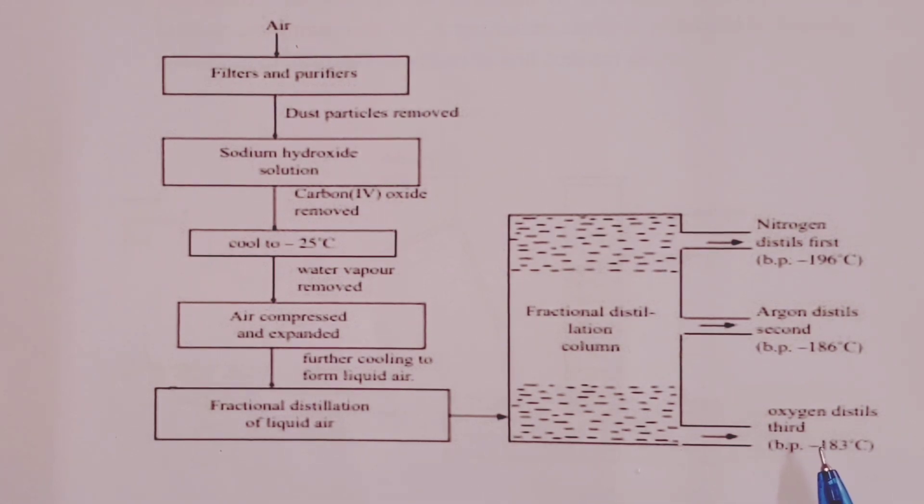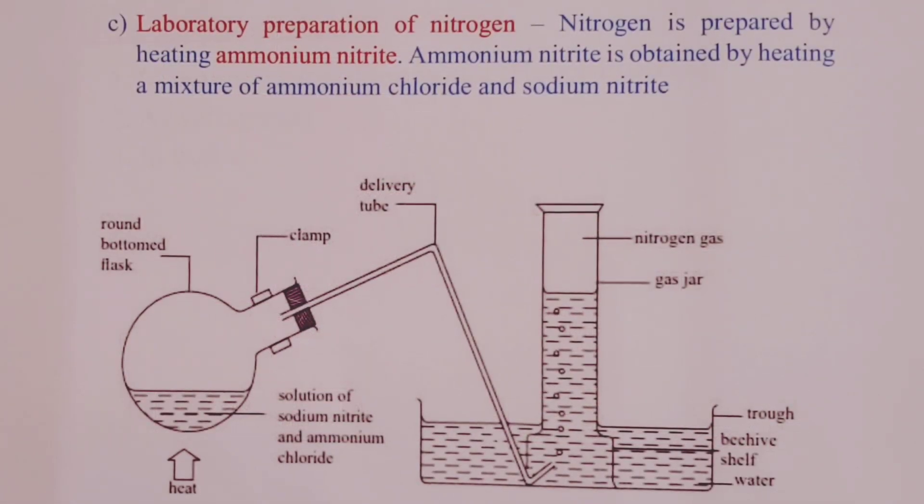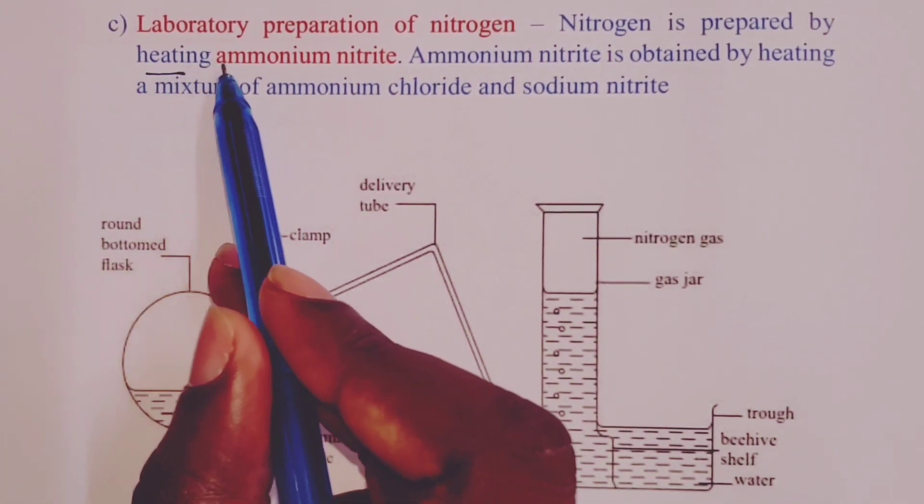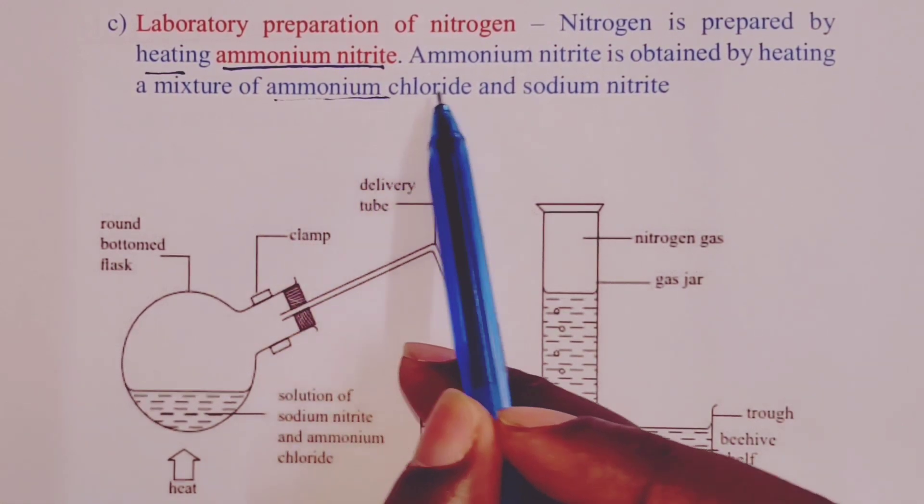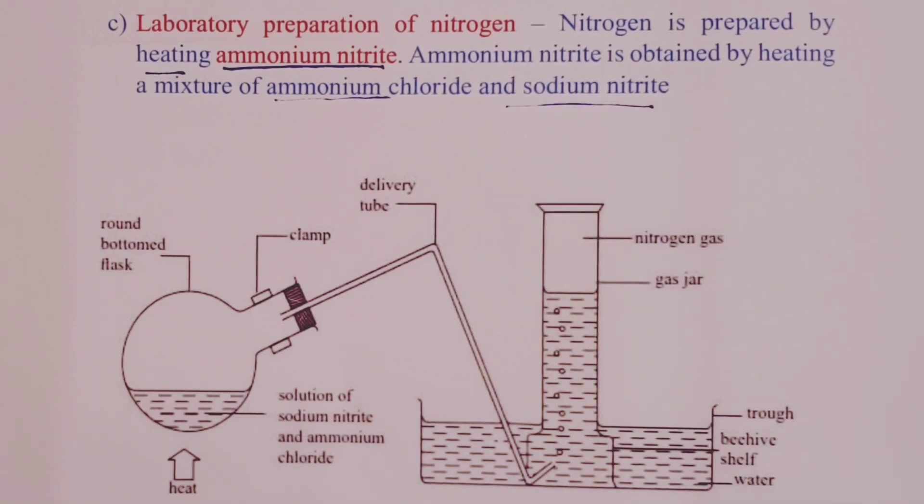Let us now look at laboratory preparation of nitrogen using chemicals. Nitrogen is prepared in the lab by heating a chemical that is called ammonium nitrite. Now, ammonium nitrite is usually obtained when we heat a mixture of ammonium chloride and sodium nitrite.